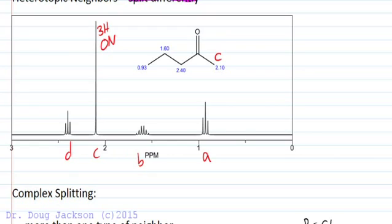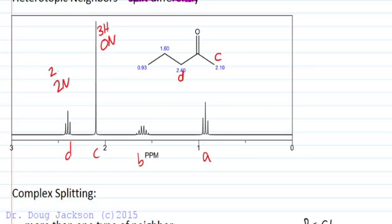We have another allylic position — the protons we've labeled D. The D protons here are enantiotopic to one another, and their neighbors are enantiotopic. So these neighbors for signal D are enantiotopic and will split D equivalently. What we have here is a triplet, which means we have two neighbors. We integrate to two because we're a CH2 and have two identical neighbors as far as splitting is concerned, so we get a triplet.